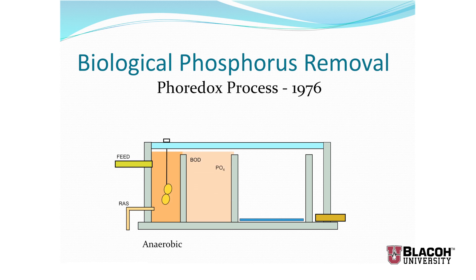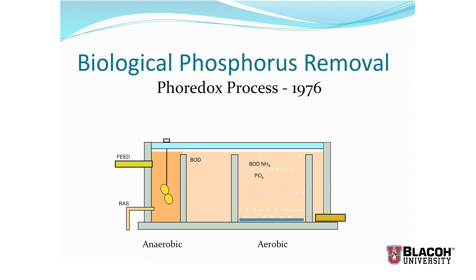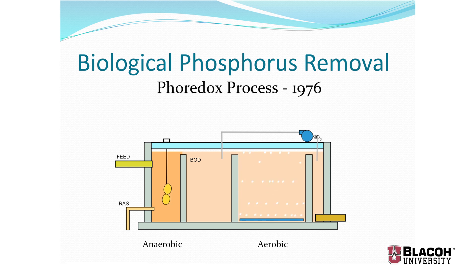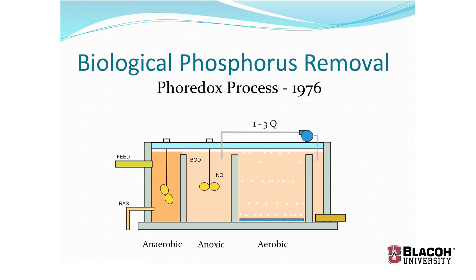The phosphate is not removed in the anoxic zone; it moves on to the aerobic zone along with the BOD and ammonia. The aerated process then breaks down the BOD, removes the ammonia, and the phosphorus accumulating organisms absorb the phosphorus in that aerobic environment. We recycle back to the anoxic zone, and the return activated sludge comes into the anaerobic stage at the beginning — that is how the microorganisms get back into that stage. This is simply the MLE process with an anaerobic zone on the front end.